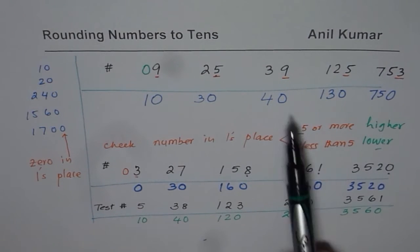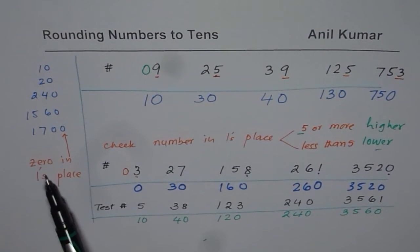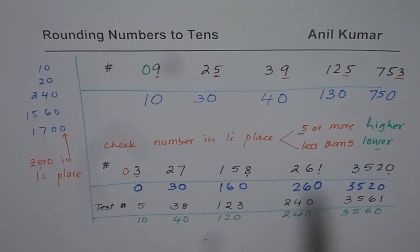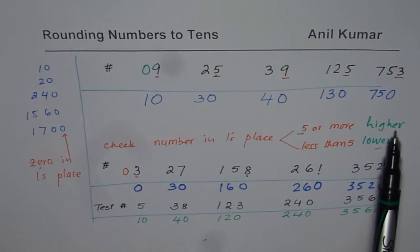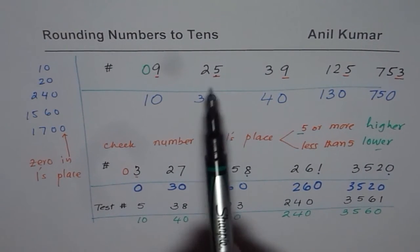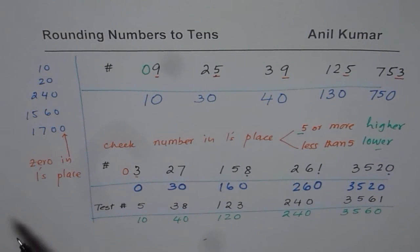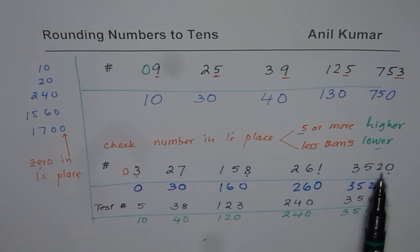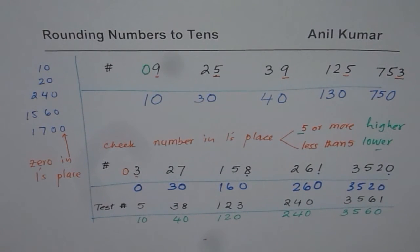In all these numbers after rounding, we have a 0 in 1's place. Some numbers increase, some decrease. Numbers will increase after rounding, if you have 5 or more in 1's place. But the numbers will decrease if you have less than 5 in 1's place, like here, 3, 3, 1, or 0. Well, if there is 0, the number will not increase or decrease, it remains same. So that is the gist of it.